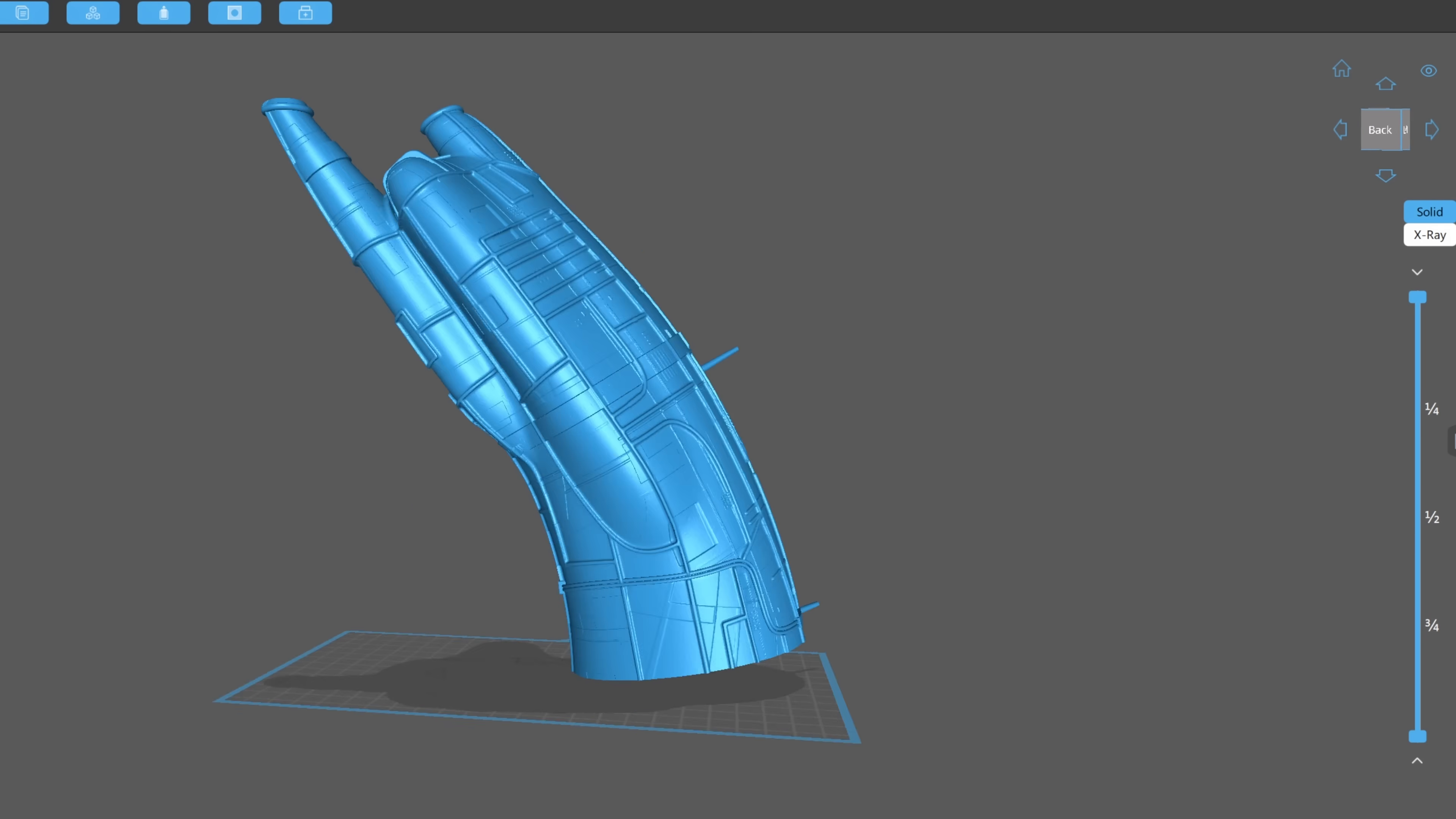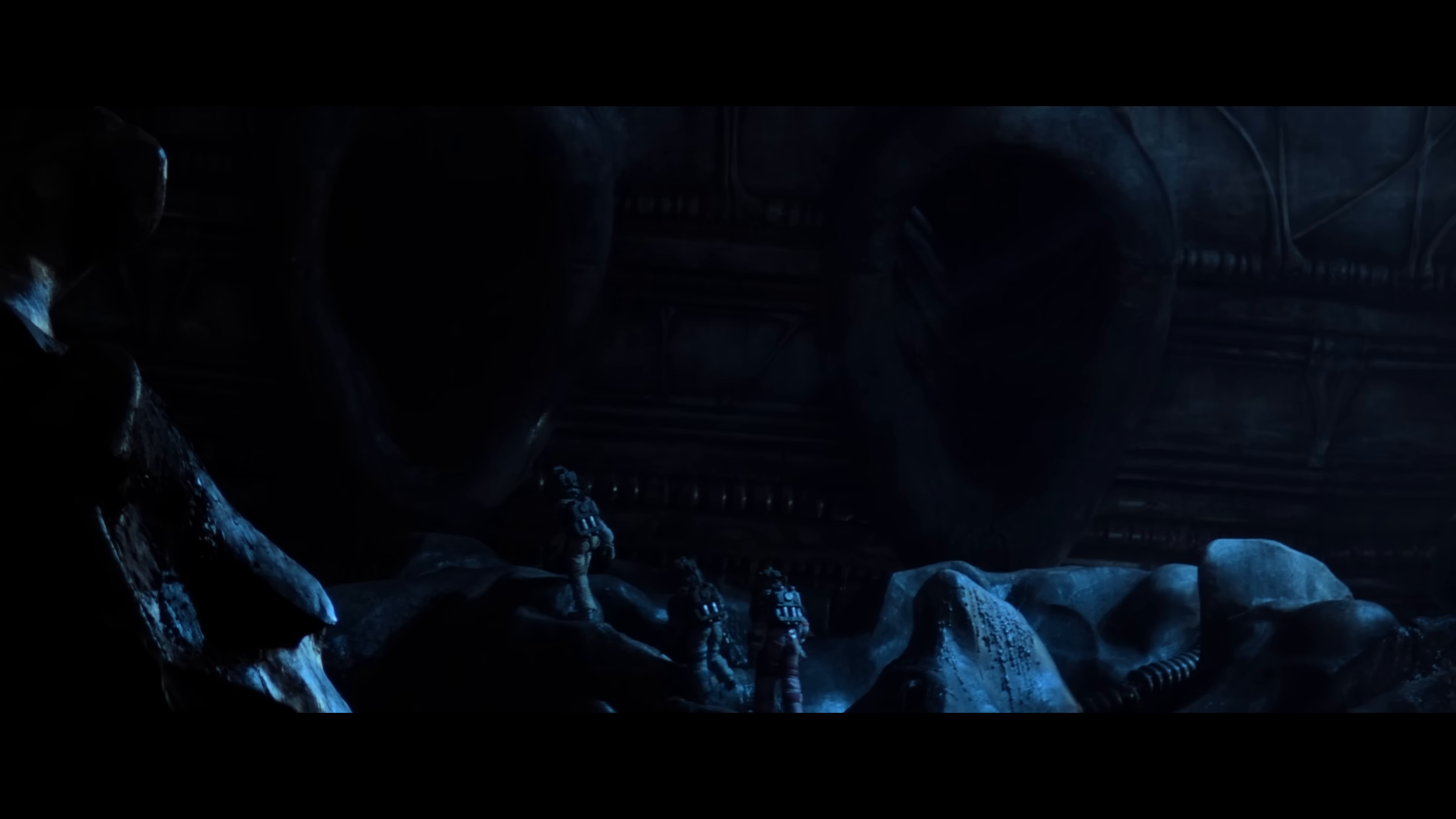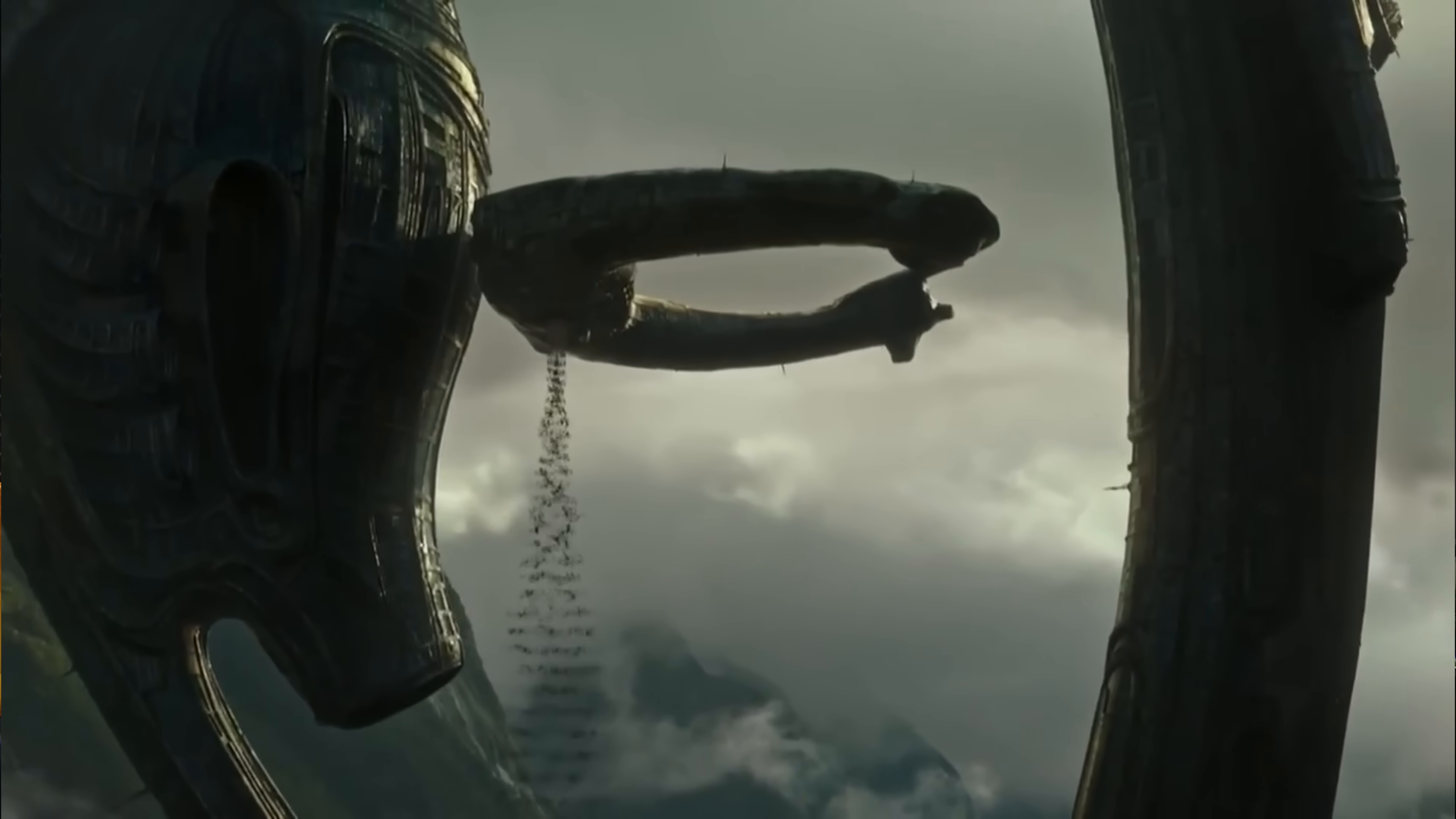Now, our first 3D print project is making a 3D model of the derelict ship from Alien. Now, this is Ridley Scott's 1979 original. We've designed from HR Giger, and I think to this day the spaceship design is incredible because it still stands up to be an incredibly original design, and it's got very organic biomechanical design that HR Giger was known for, and it's just a very interesting form and shape.